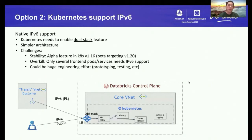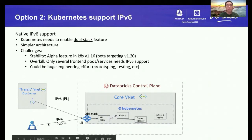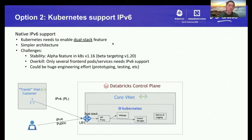Because of those challenges, we also explored the second option: supporting Kubernetes natively with IPv6. Because we still need to serve IPv4 traffic for public access not through PrivateLink, we'd have to use the dual-stack feature in Kubernetes. If we use dual stack at the load balancer level, we can accept both IPv6 and IPv4. The overall architecture looks simpler, which is good. However, this option has its own challenges.